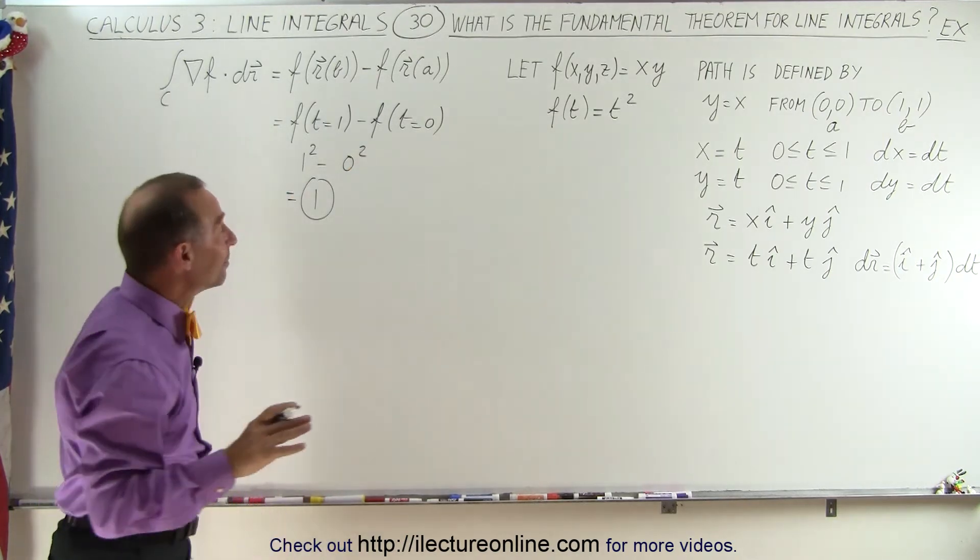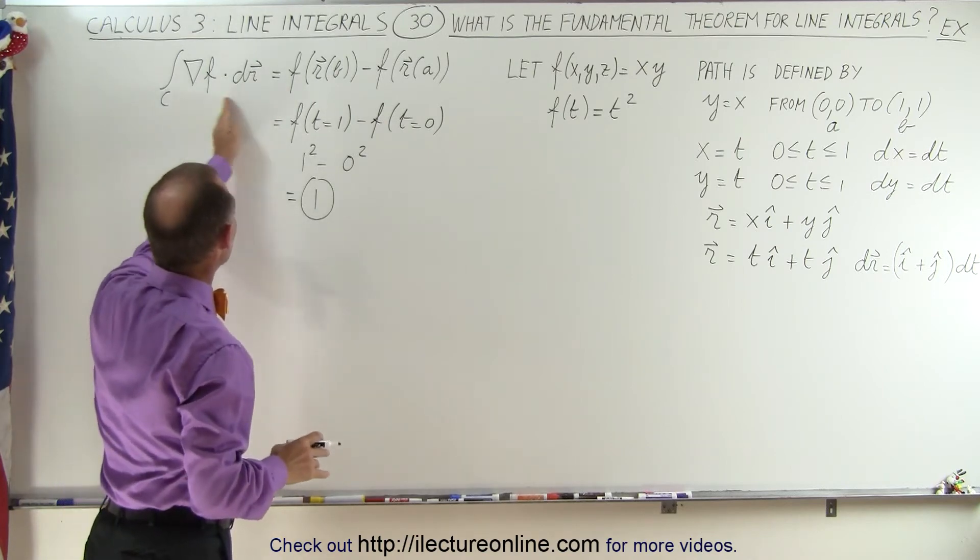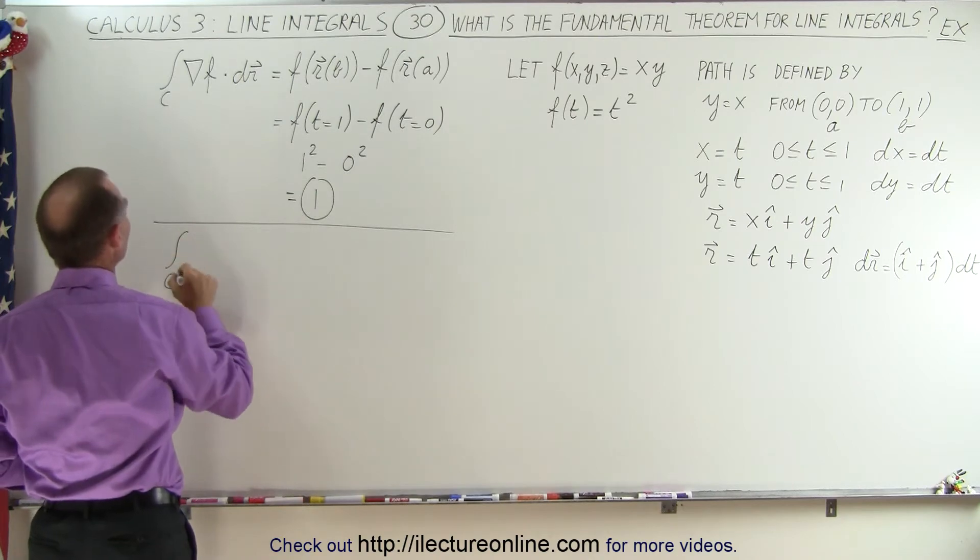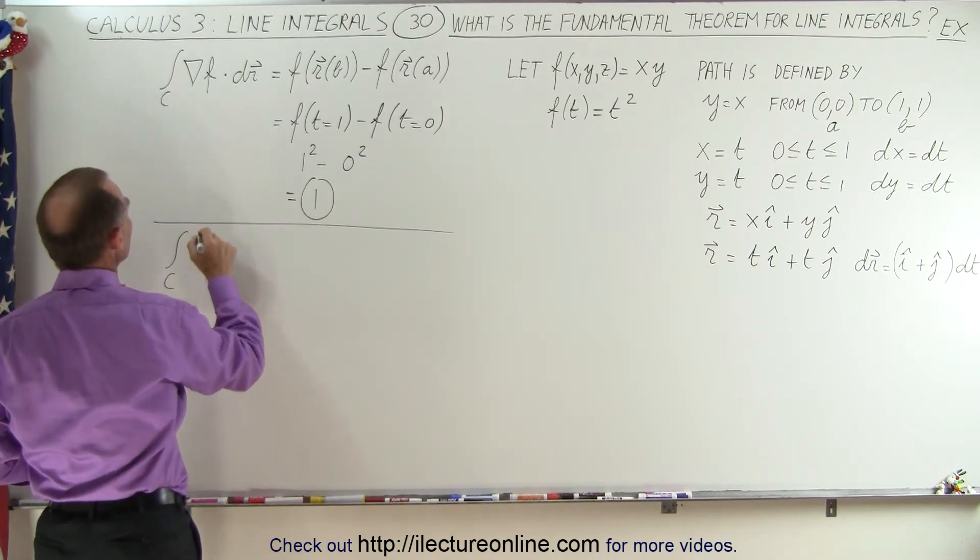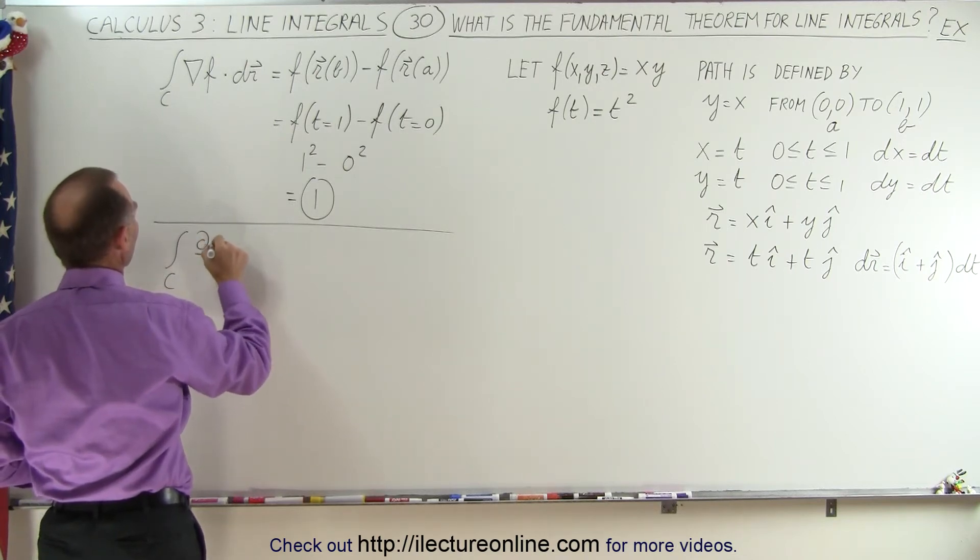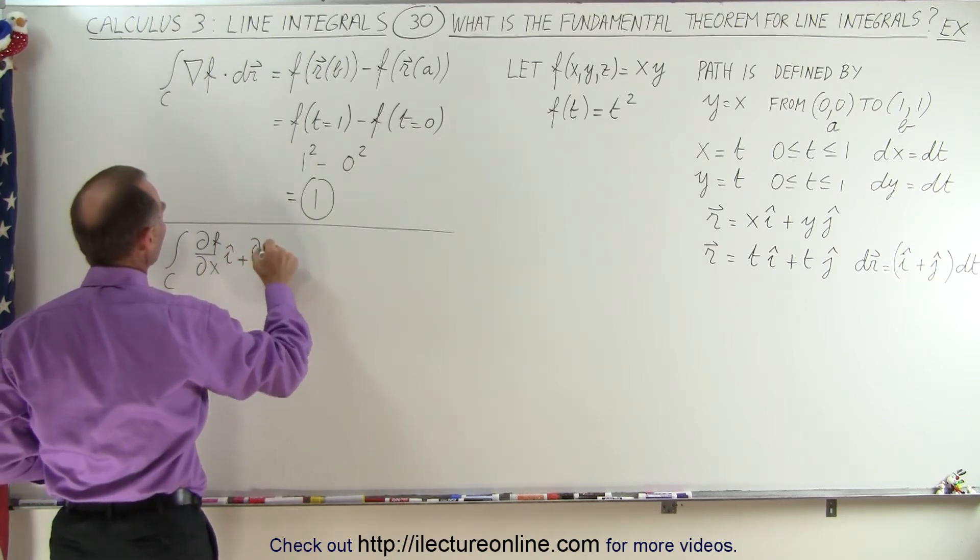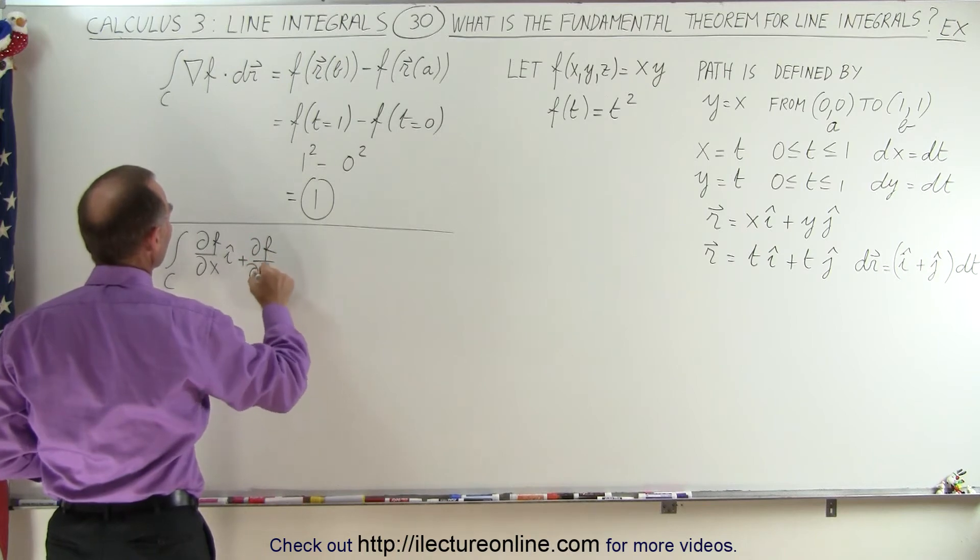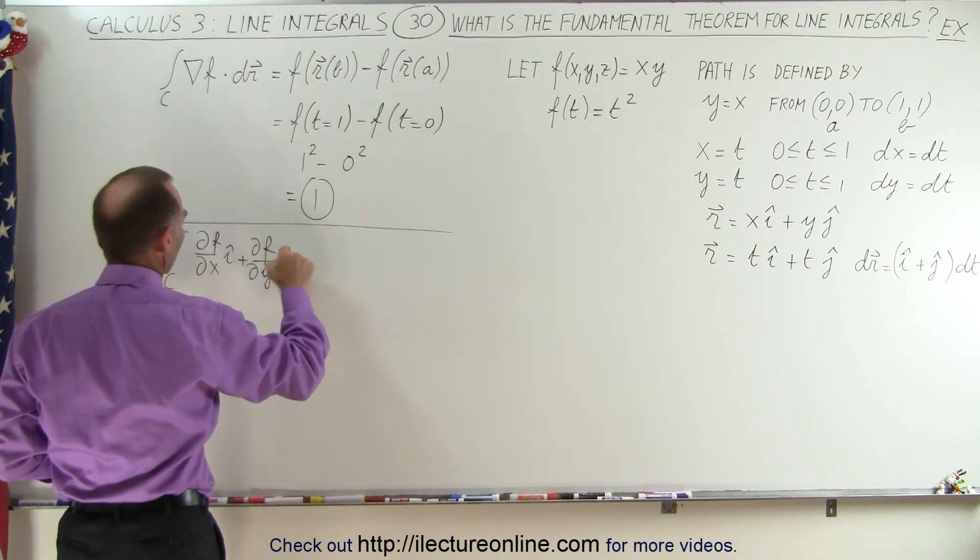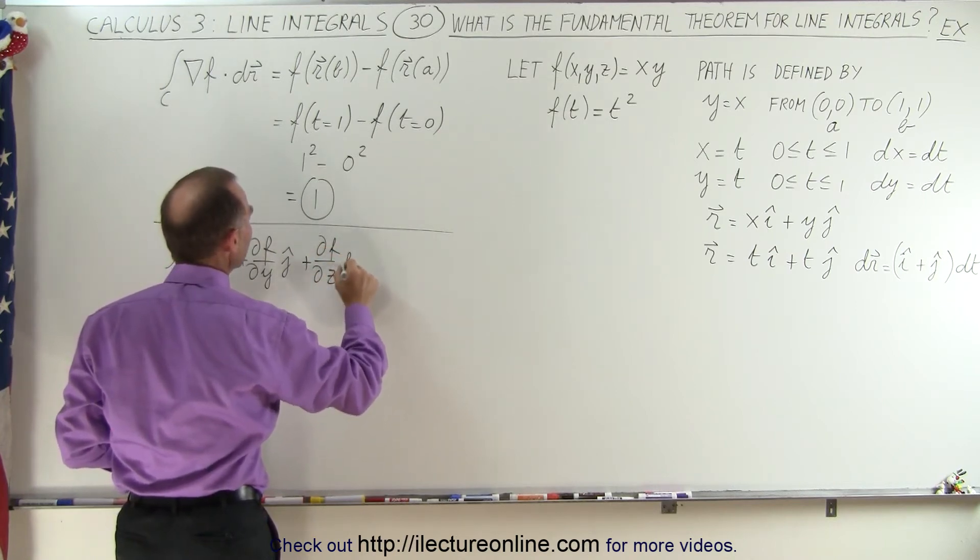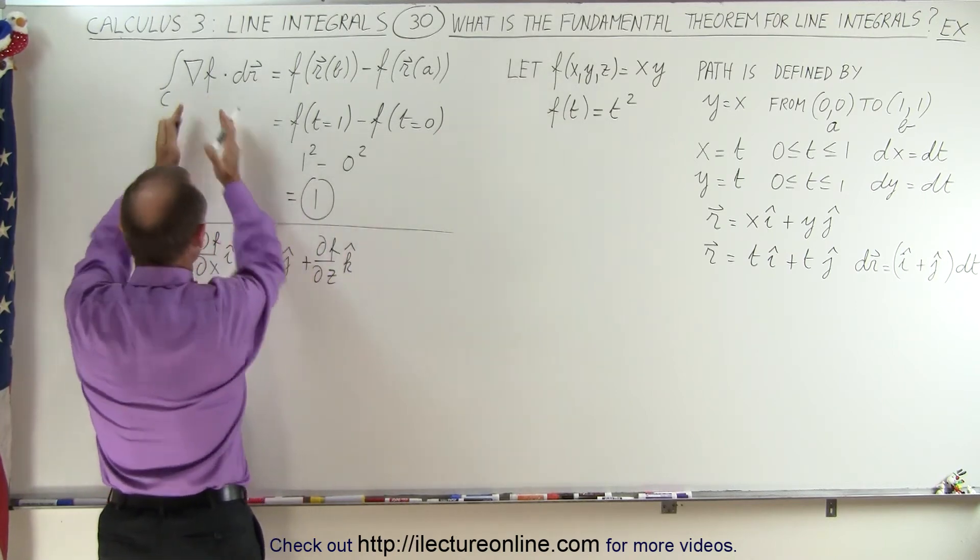Now we should be able to get the same result when we actually work this out. So let's go ahead and work this out. So now for the second integral, we can say that the integral of the gradient of f and the gradient of f would be the partial of f with respect to x in the i direction plus the partial with respect to f in the y direction or in the j direction plus the partial of f with respect to z in the k direction. So that's the gradient of f.